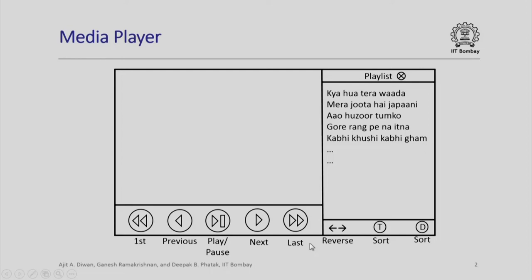Here is a typical media player. The media player will have an interface with various buttons: move back, move forward, full forward, full back, pause, and play/pause. There will be a playlist showing the songs being played. You also have options of sorting those songs either by title or duration. This is how a typical media player playlist looks and how we operate it.